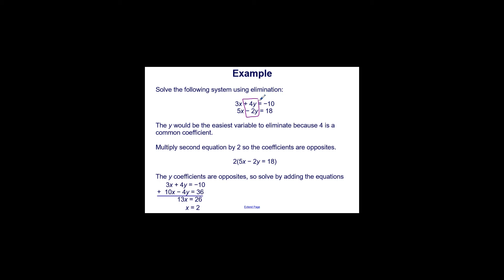So we can multiply the second equation by 2 so that the coefficients are opposites. We have 2 times 5x, 2 times negative 2y, and 2 times 18, which gives us 10x minus 4y equals 36. We can multiply everything by 2 since we're doing it to the entire equation — we're not changing the value of the equation, just changing how it looks. It's the same equation written in a different way, but now the y coefficients are opposites.